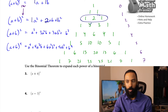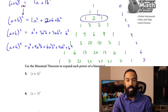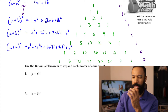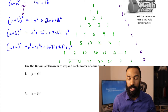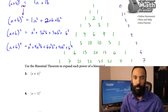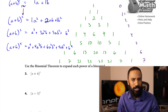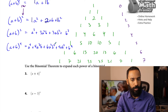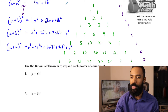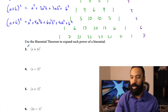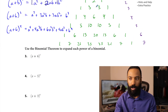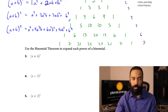Let's go ahead and try some of the problems. Number three: x plus 6 quantity cubed. I'll be referring to row three — one, three, three, one — four terms. Let me just write out one, three, three, one so you have it.